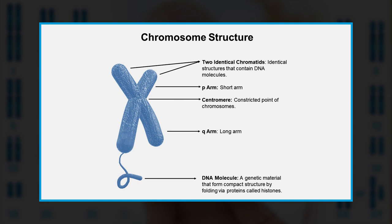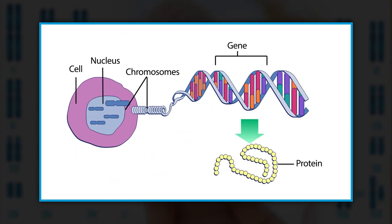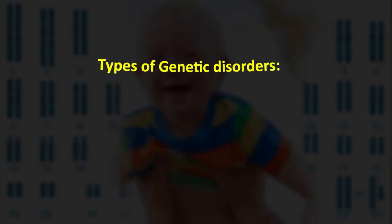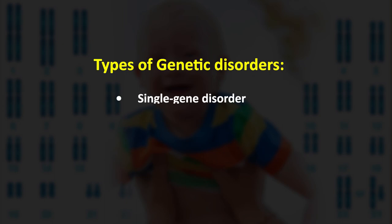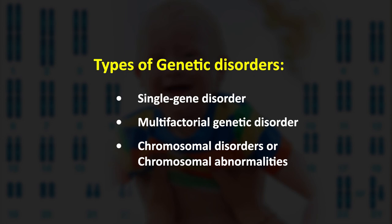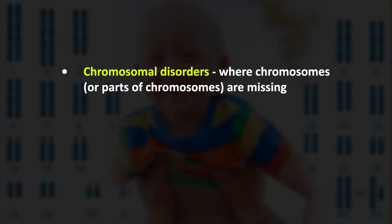Let's start with the introduction. Chromosomes are the structures that hold our genes. A gene is a segment of DNA — deoxyribonucleic acid — that contains the code for a specific protein that functions in one or more types of cells in the body. Genetic disorders occur when a mutation affects your genes, though carrying the mutation doesn't always mean you will develop a disease. There are many types of genetic disorders, including single gene disorders, multifactorial genetic disorders, and chromosomal disorders or chromosomal abnormalities.